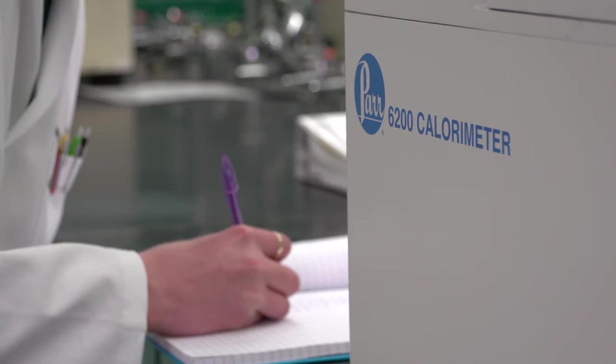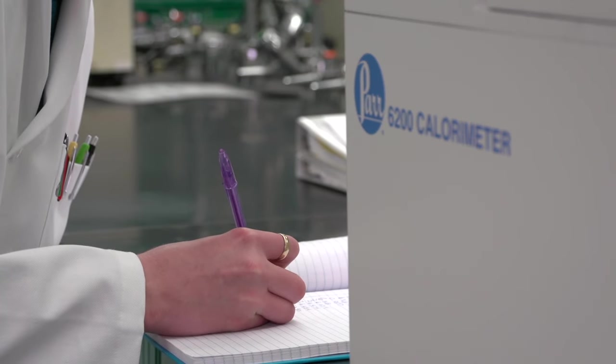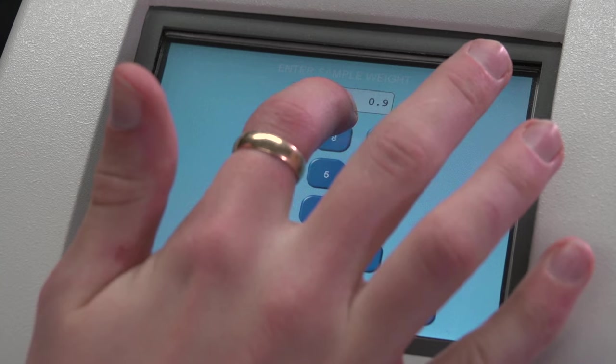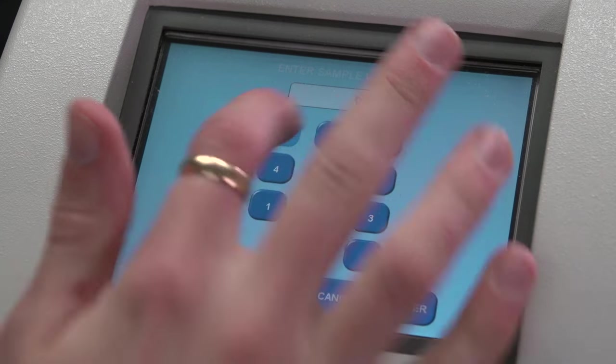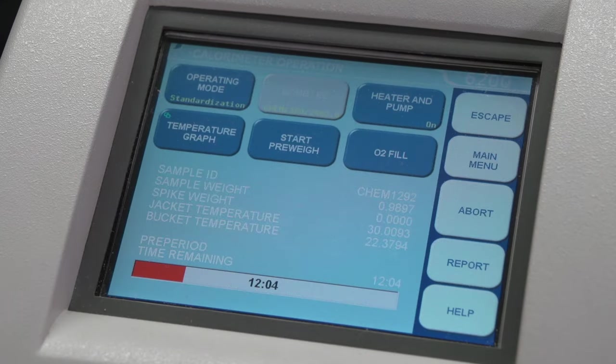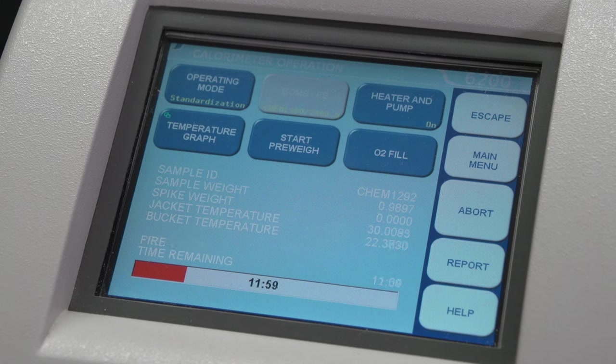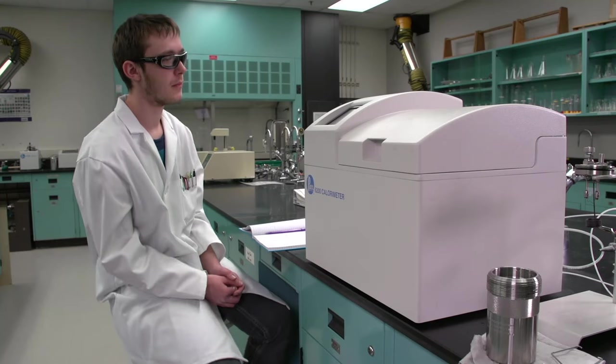Record and accept the sample ID number provided. Enter the bomb ID as indicated in the laboratory procedure. Enter the sample mass. The instrument will beep briefly before firing the bomb, at which point the operator should move away from the instrument.